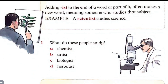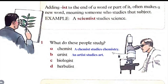And 'botany' will become 'botanist' or 'botanical'. Let's solve question number one — I hope you will understand the concept clearly. What do these people study? A chemist studies chemistry. An artist studies art. A biologist studies biology. A herbalist studies about herbal.